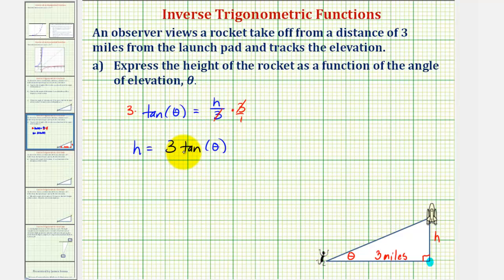Now we have H as a function of theta, but we can also write this using function notation as H(θ) equals three tangent theta. Of course, these two equations are equivalent; this last one is just written using function notation.